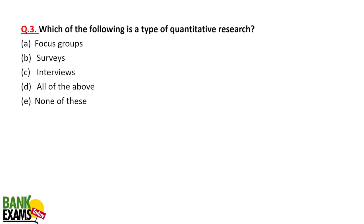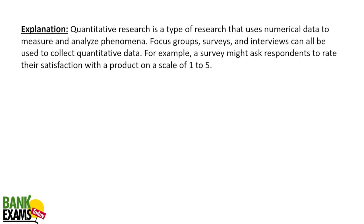Which of the following is a type of quantitative research? Quantitative, as the name suggests, can be explained in numbers. Focus groups, surveys, interviews — where you are doing one-to-one interaction with respondents — surveys and even focus groups where there is a group discussion: these are all quantitative types of research.